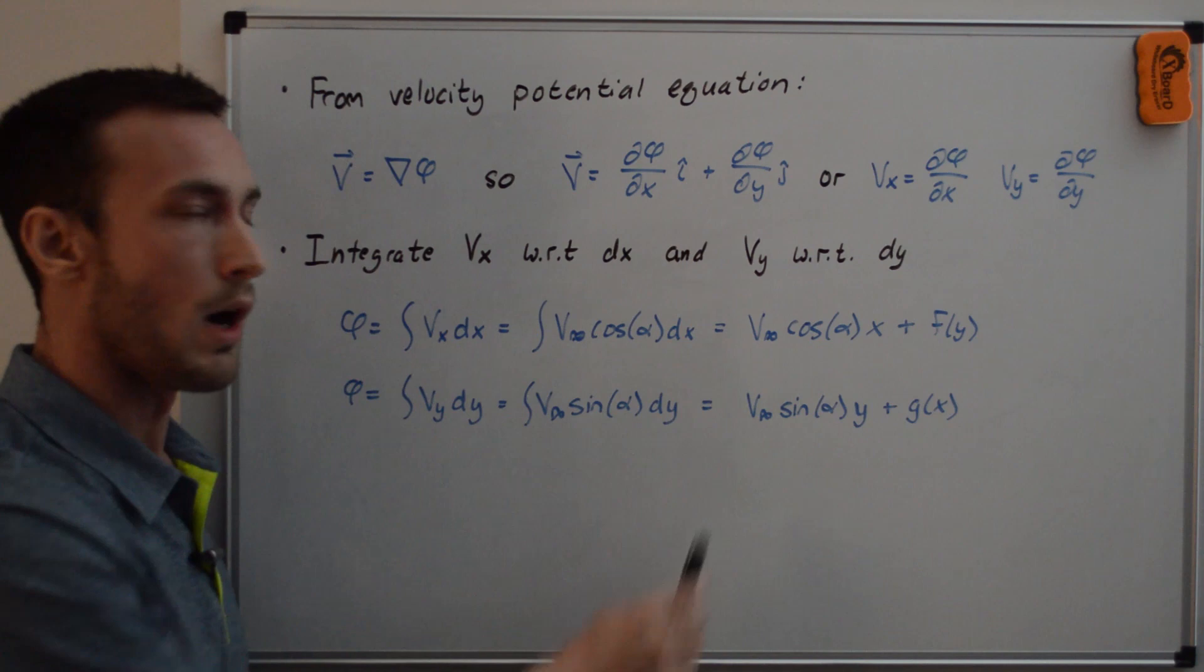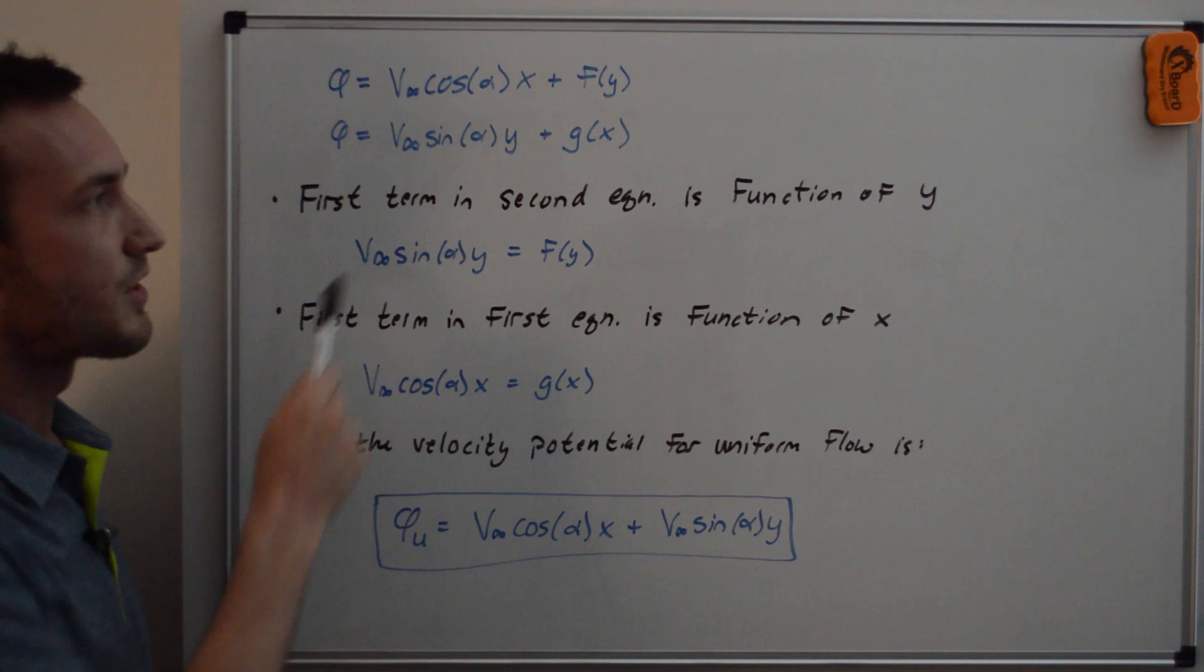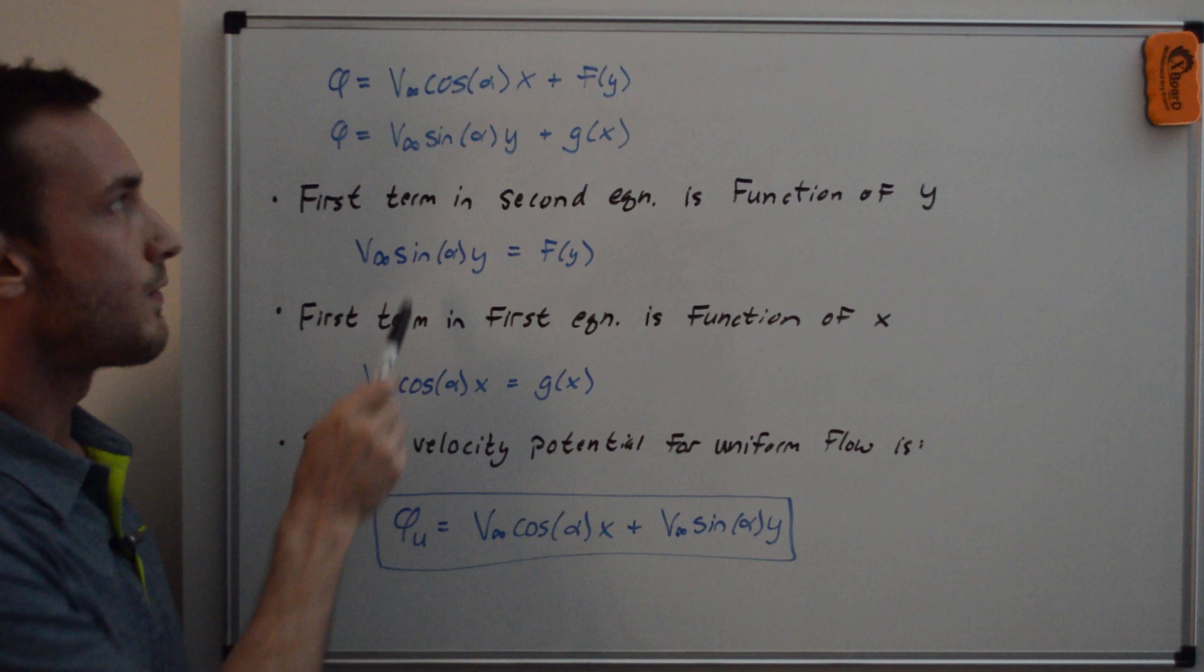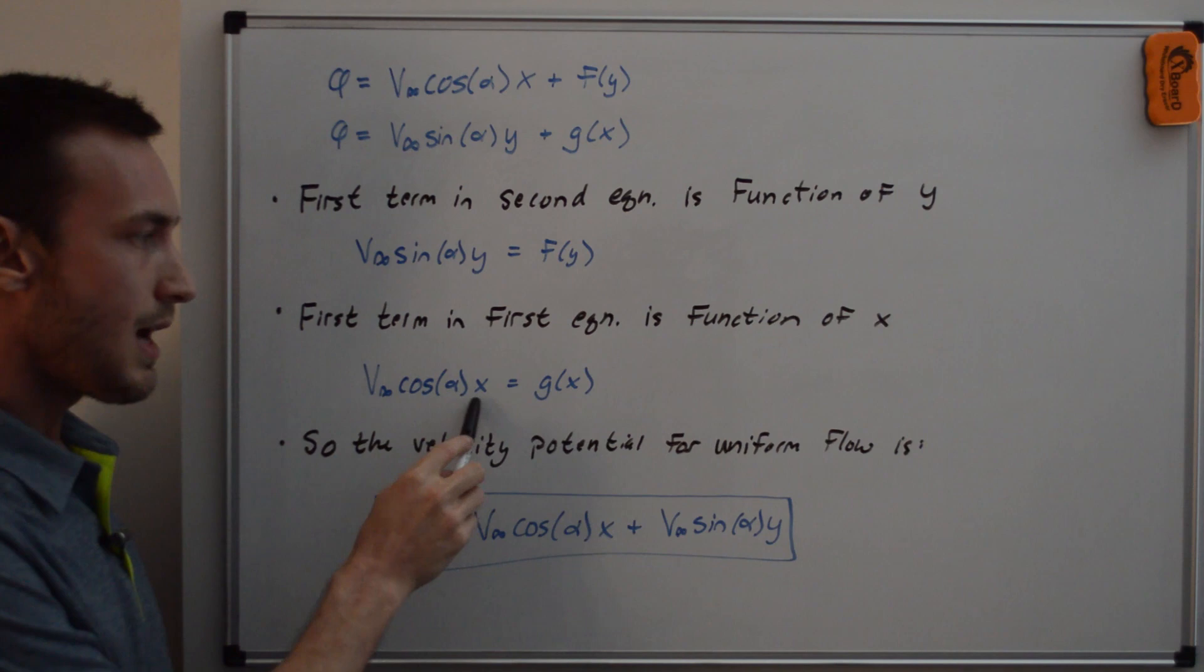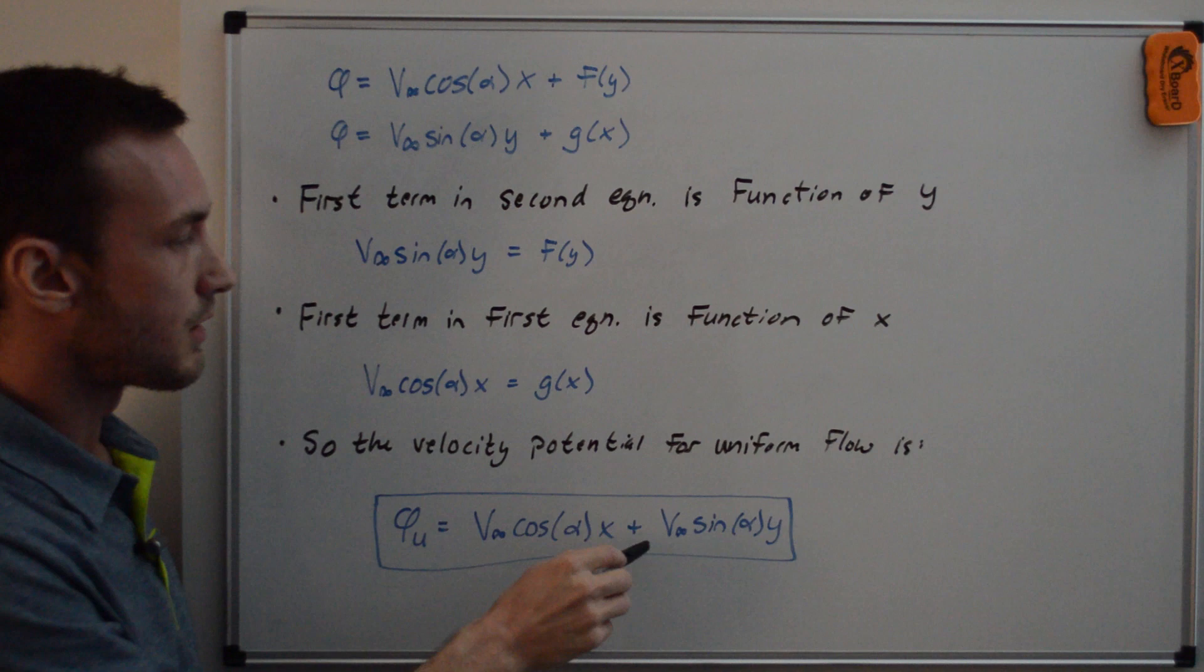So how do we find out what those extra functions are, this f of y and g of x? I've rewritten these phi values from the previous whiteboard up here, and we can see that v infinity sine alpha y is f of y, and v infinity cosine alpha x is g of x, which means that we can write the velocity potential for uniform flow as phi sub u equals v infinity cosine alpha x plus v infinity sine alpha y.